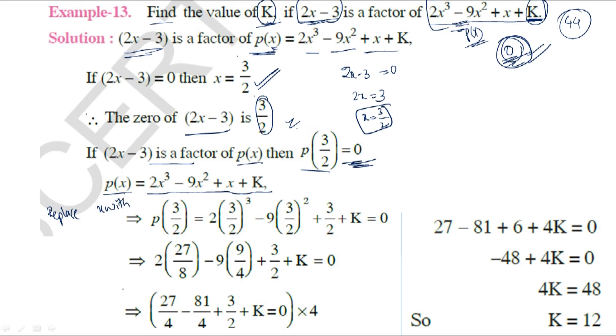Replacing x with 3/2: P(3/2) = 2(3/2)³ - 9(3/2)² + 3/2 + K. Since we know the remainder is 0, this equals 0.